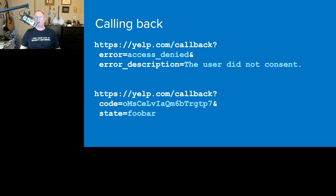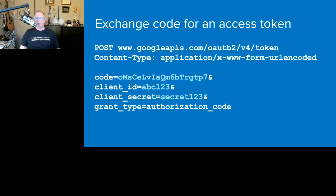If you click deny on the consent screen, Google redirects back with an error. If you click allow, it redirects back with the authorization code and the original state that was passed in by Yelp. That's the first leg — the authorization step. Now we have the step where Yelp exchanges that authorization code for an access token.